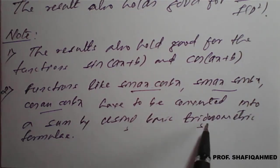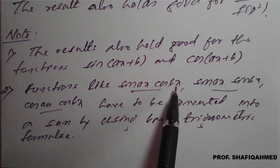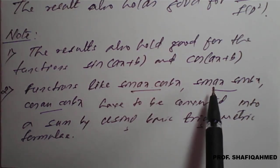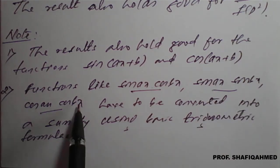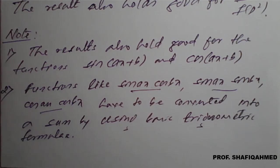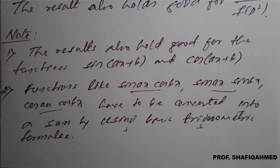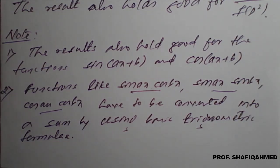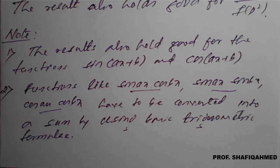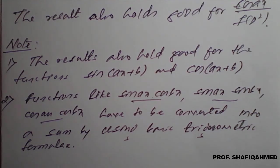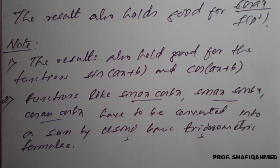You have to convert whatever product form is given into a sum using basic trigonometric formulas. Once converted to either cos(ax) or sin(ax) form, we can apply the Type 2 steps to get the particular integral. Now let's see problems based on Type 2.